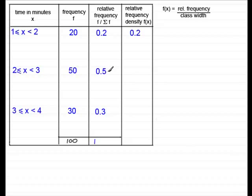Similarly, for the 0.5, we've got 0.5 divided by the width here of 1. So that's going to be 0.5. And for the other value, that would be 0.3.